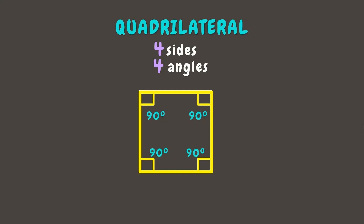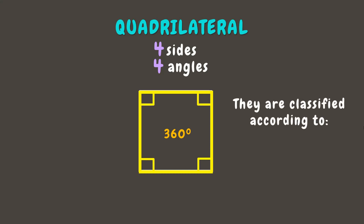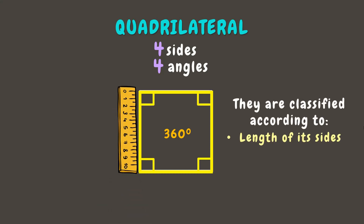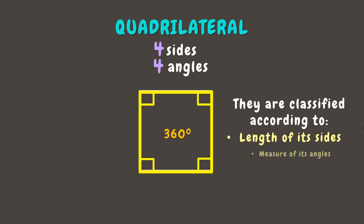Here we can see that this figure has four right angles, or four 90-degree angles, which total to 360 degrees. Remember that the quadrilateral has a total of 360 degrees. Quadrilaterals are classified according to the length of their sides and the measure of their angles. Now that you know some basics, let's explore the different kinds of quadrilateral.